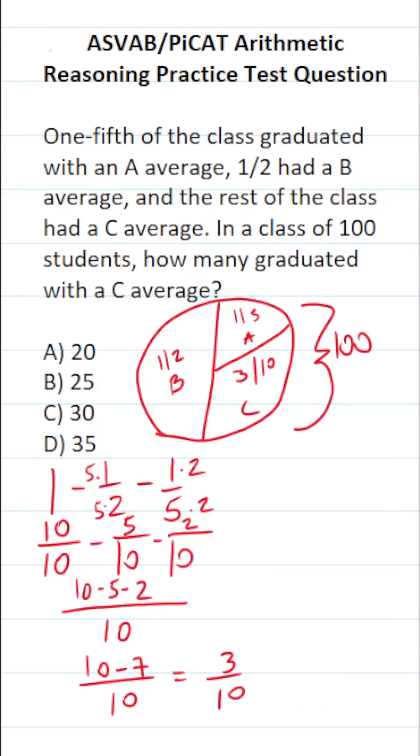Now to answer this question, what is three-tenths of the 100 people who graduated? That's three-tenths times 100. Write 100 as a fraction by placing it over 1. We can cross-reduce: 10 goes into 10 one time, 10 goes into 100 ten times.